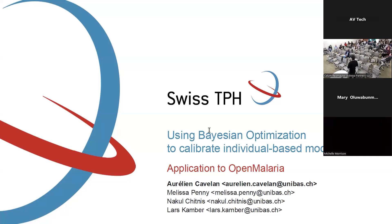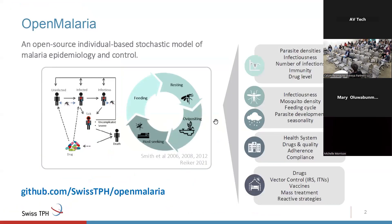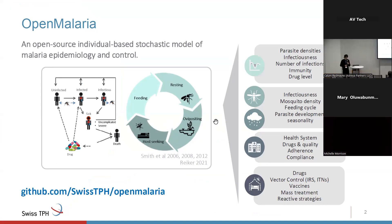I'm going to talk about Bayesian optimization to calibrate individual-based models, and more specifically how we use it to calibrate OpenMalaria. OpenMalaria is an open-source individual-based stochastic model of malaria epidemiology and control, where we simulate individual humans but also individual infections inside each human. We also have a vector model, and we simulate different types of drugs and many interventions. It's available on GitHub.